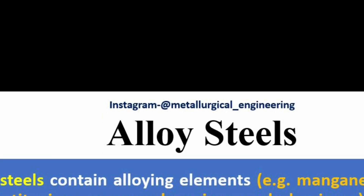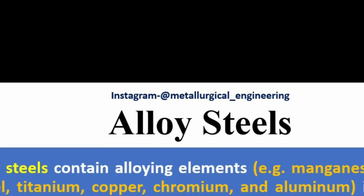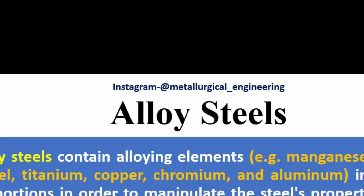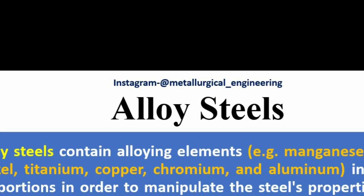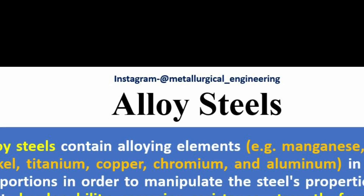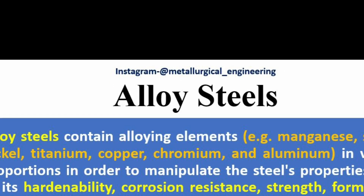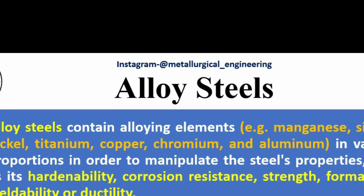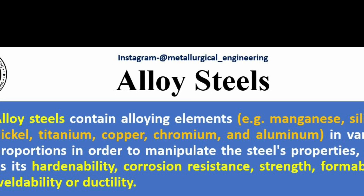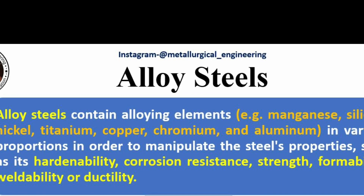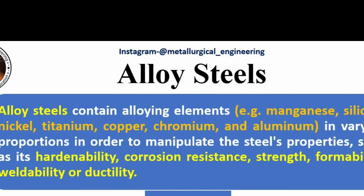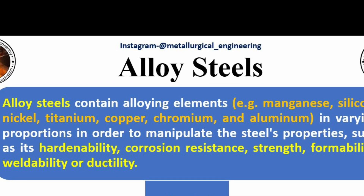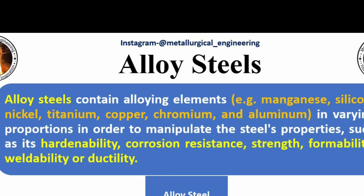Second is alloy steel. Alloy steels contain alloying elements such as manganese, silicon, nickel, titanium, copper, chromium, and aluminum in varying proportions in order to manipulate the steel's properties, such as its hardenability, corrosion resistance, strength, formability, weldability, or ductility.